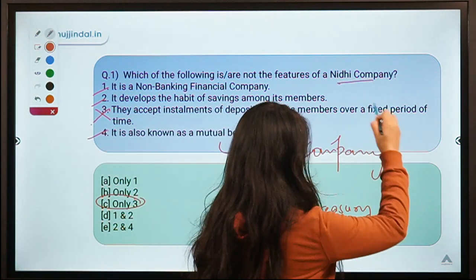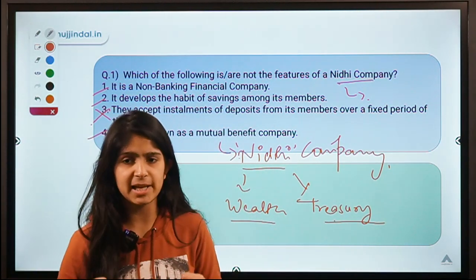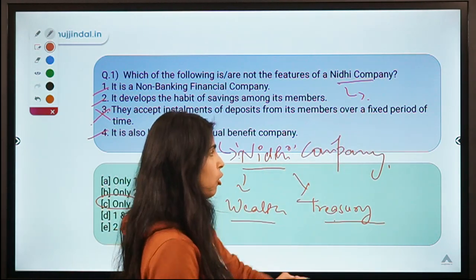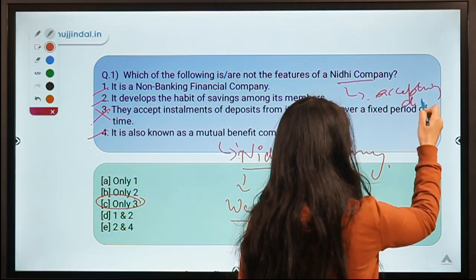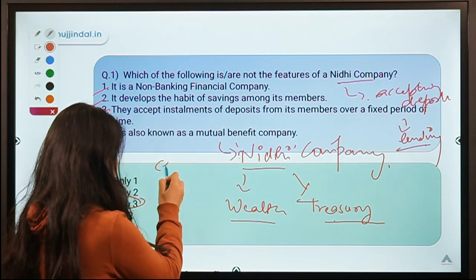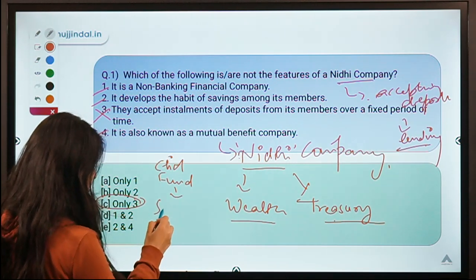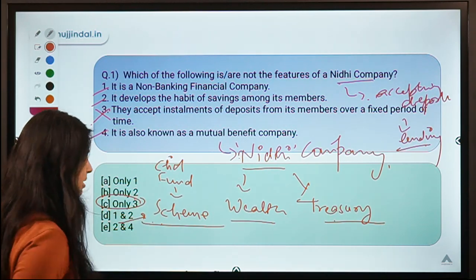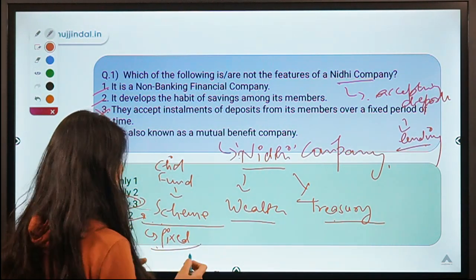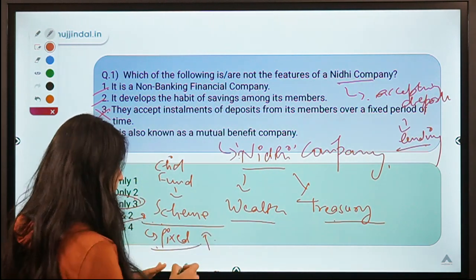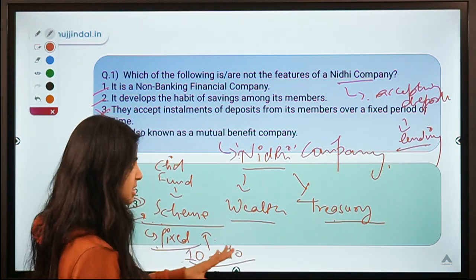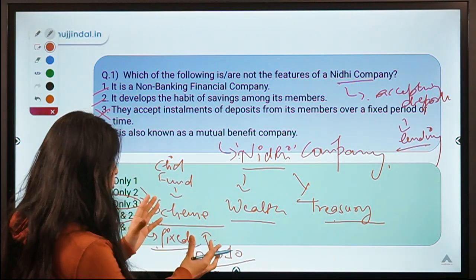A Nidhi company works in a cooperative structure — it collects deposits from its members and provides loans whenever they need them. It does the job of accepting deposits and lending. A chit fund, on the other hand, is a scheme that runs for a fixed period of time with a small number of members. For example, with 10 members, the process runs for 10 months — the number of members equals the number of time periods.